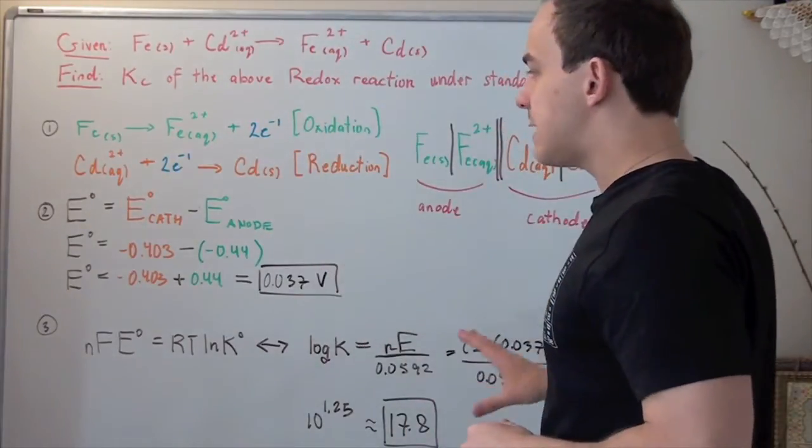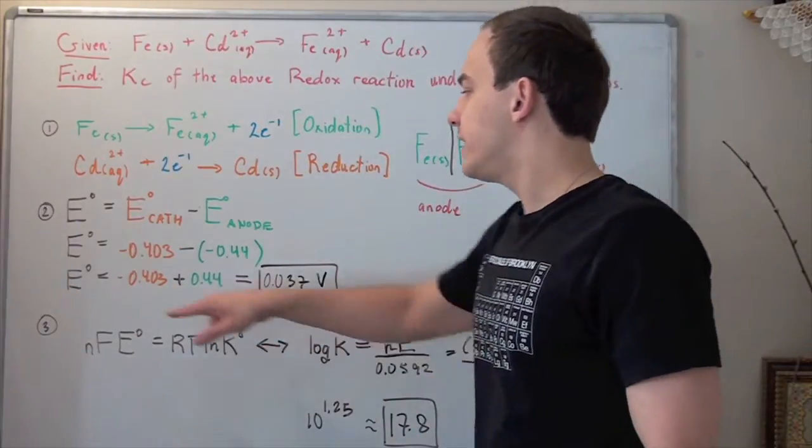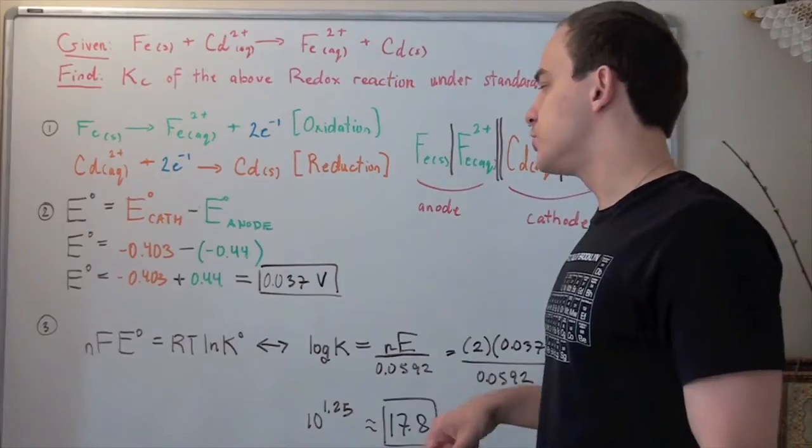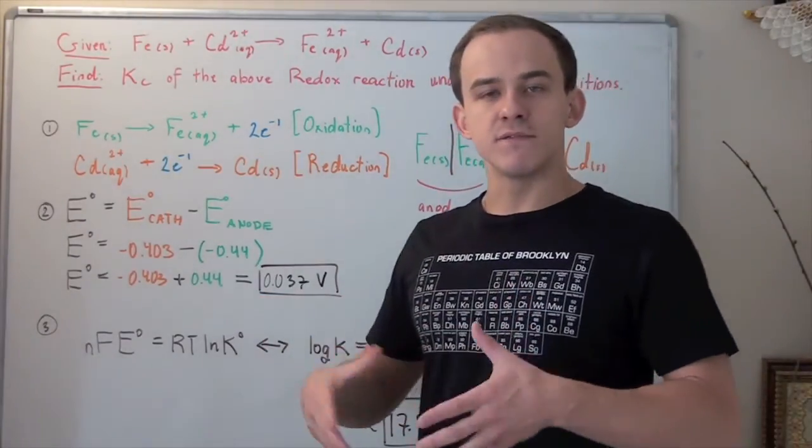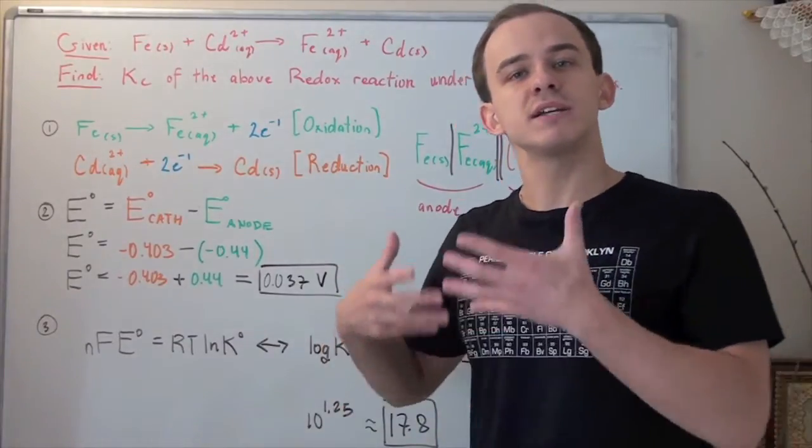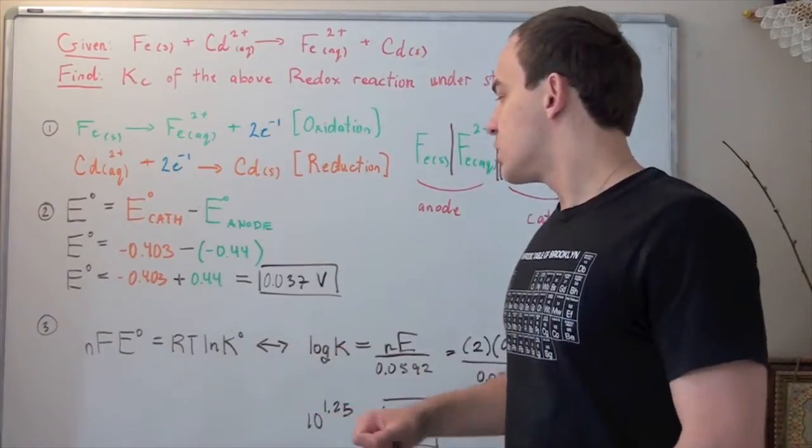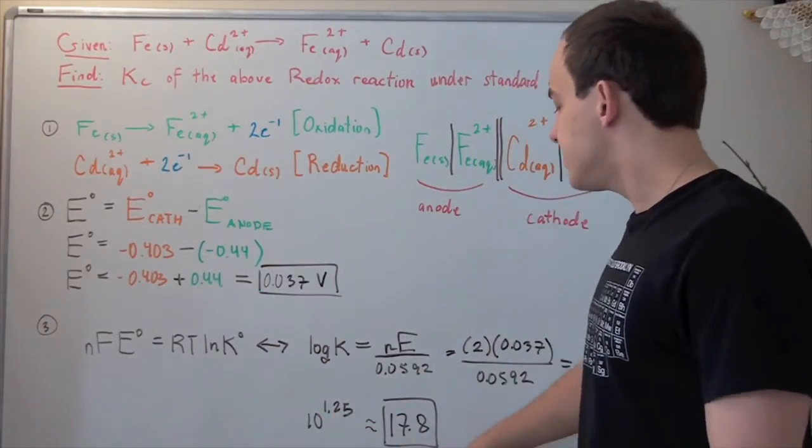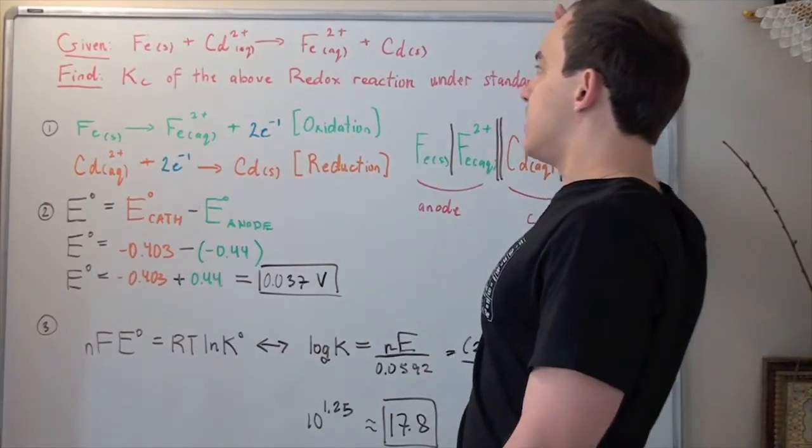This is consistent with our E cell. A positive value for cell voltage means the reaction is product favored, while a negative value means it's reactant favored. Both K and E cell agree that this reaction is favored in the forward direction.